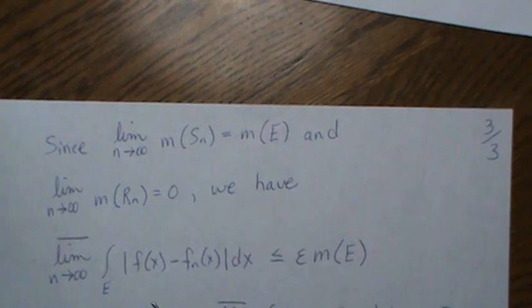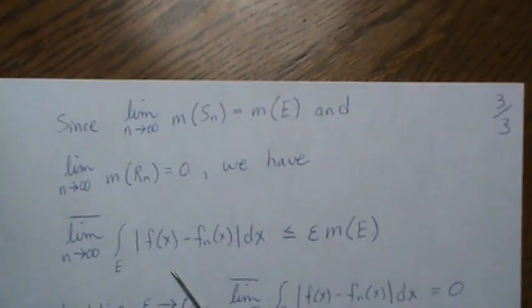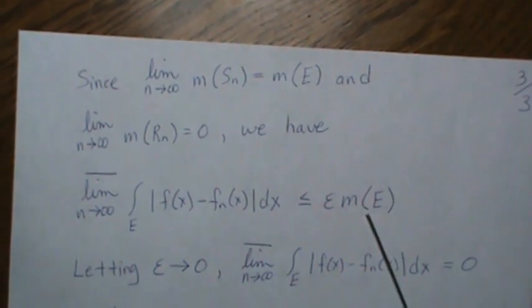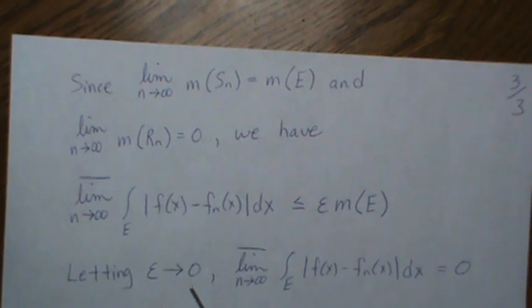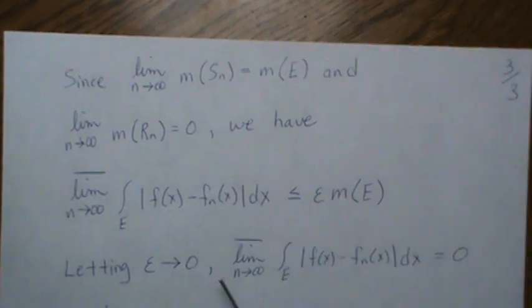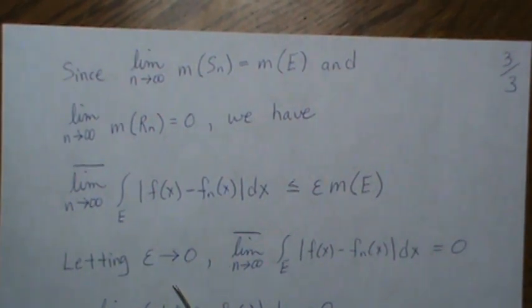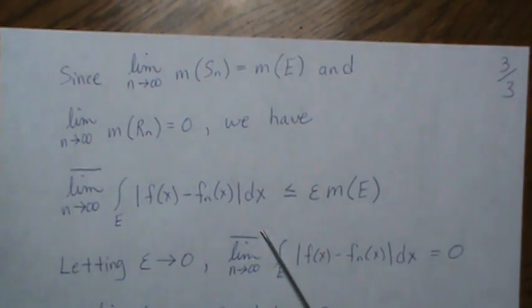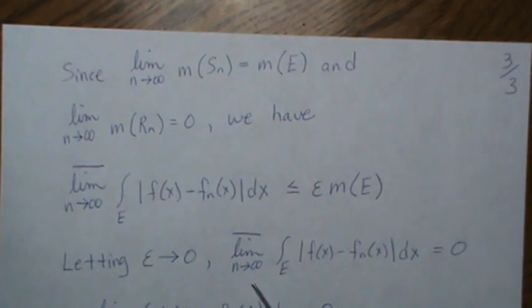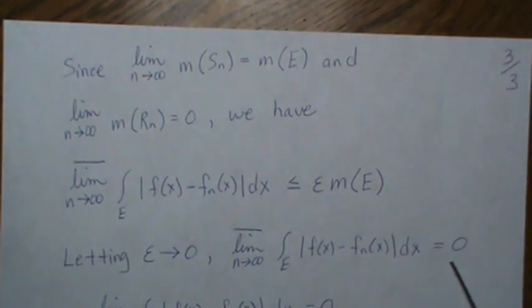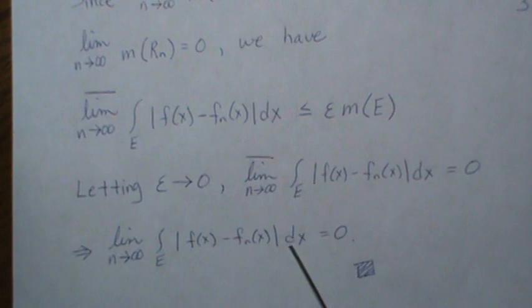So now, since the lim sup is less than or equal to that, if we let epsilon go to zero, so it says the lim sup is equal to zero as epsilon goes to zero. And if the lim sup goes to zero, that means the lim inf is zero, which says the limit is zero.